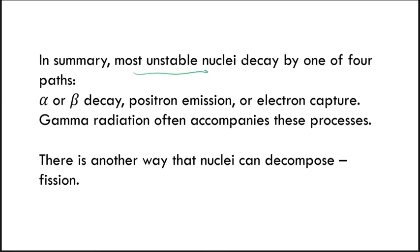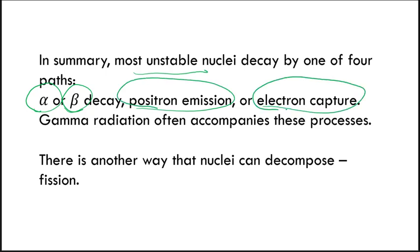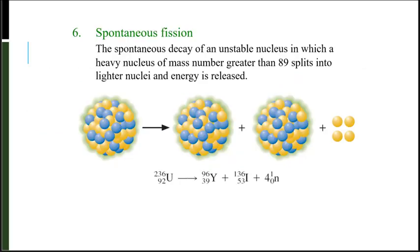Most unstable nuclei decay by one of four paths: alpha decay, beta decay, positron emission, or electron capture. Gamma radiation often accompanies these processes. But there is another way that nuclei can decompose — fission. Fission is the spontaneous decay of an unstable nucleus where a heavy nucleus that has a mass number greater than 89 splits into lighter nuclei and energy is released.